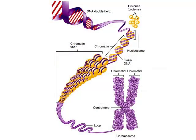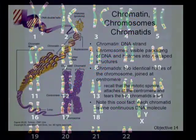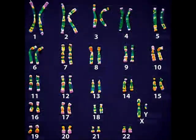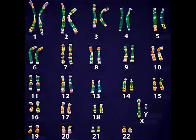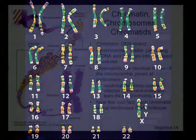So chromatin is a single DNA strand. Chromosomes are the visible packaging of DNA and histones into more or less X-shaped structures. Some look more like the letter Y — the Y chromosome being a good example — and some look more like the letter X, the X chromosome being a good example. But all chromosomes have something that looks more or less like an X with either longer or stubbier arms on them.